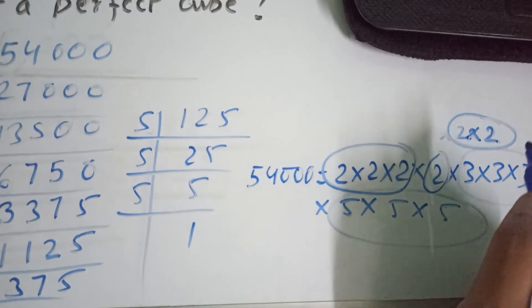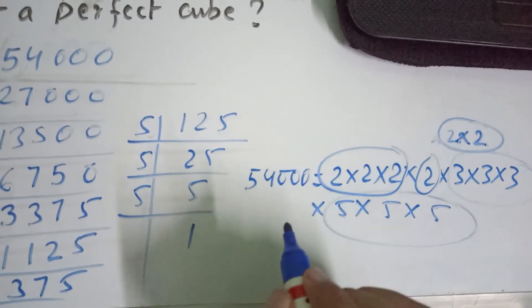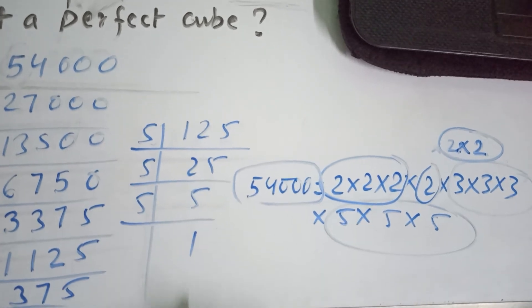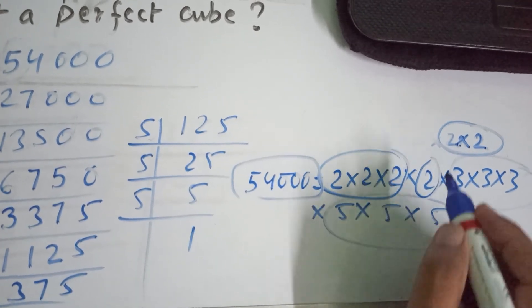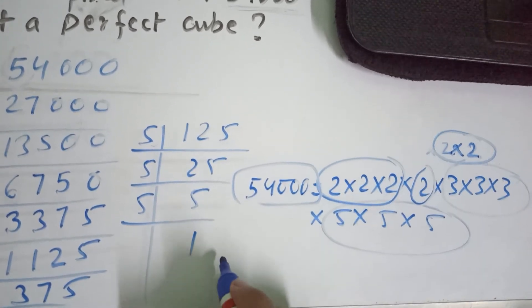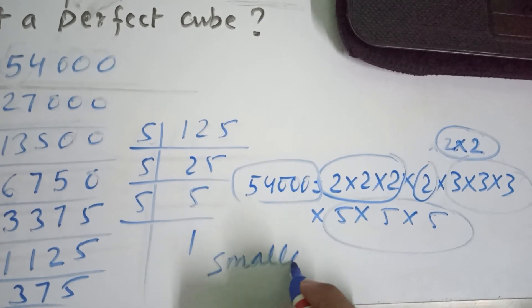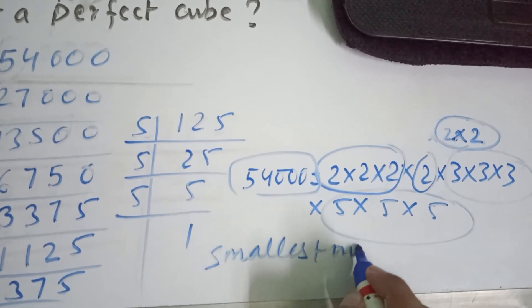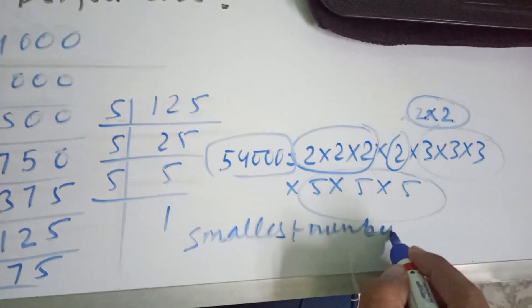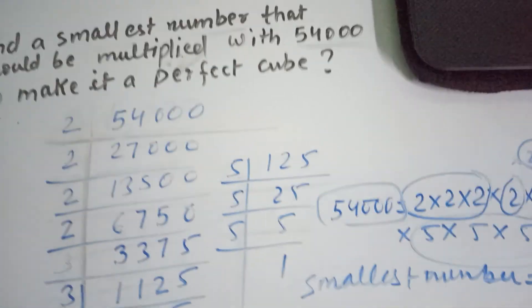So when we multiply by 2 × 2, it will complete the triplet. That means 2 × 2 = 4 is the smallest number that can be multiplied with 54,000 to make it a perfect cube. So the answer is 4. That's how you can solve it.